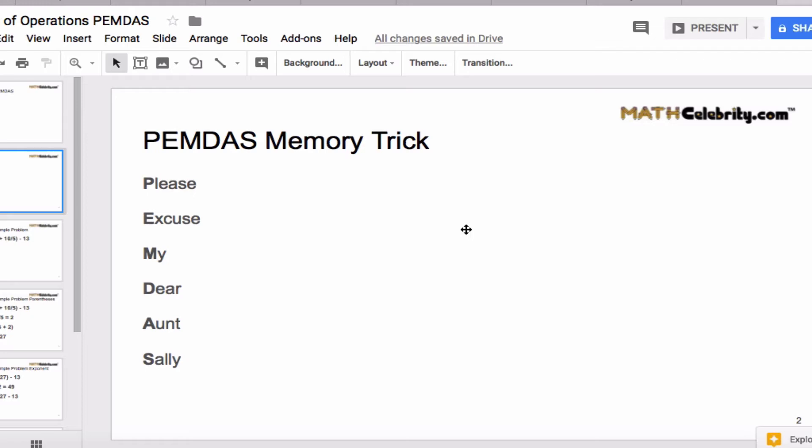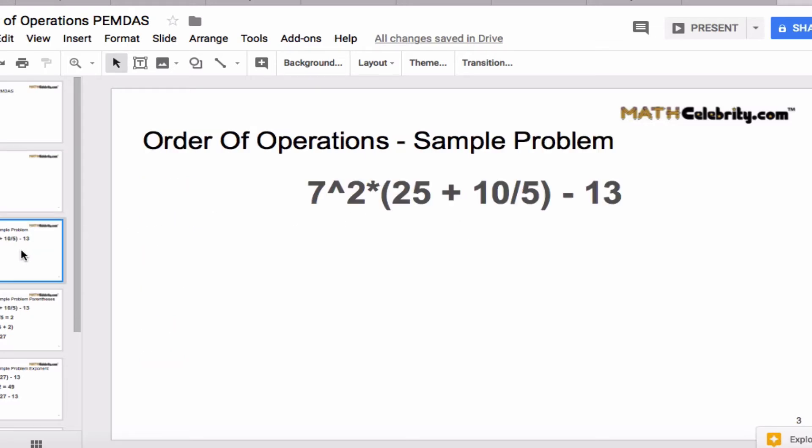Now that you know the PEMDAS words and the memory trick, let's walk through a problem and how you approach these. So here's a sample order of operations problem, and if we read this out loud it's 7 squared, or we can also read it as 7 raised to the second power, times the quantity 25 plus 10 divided by 5, and then we minus or subtract 13.